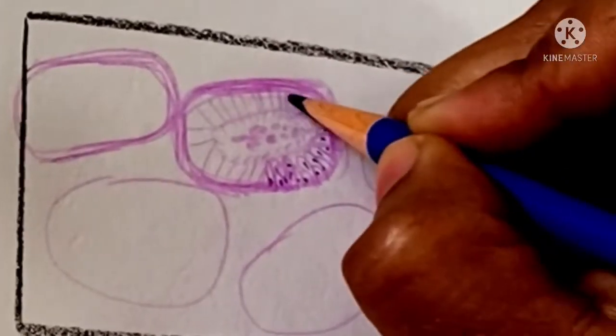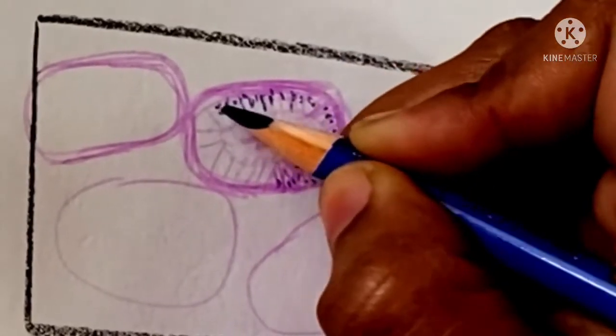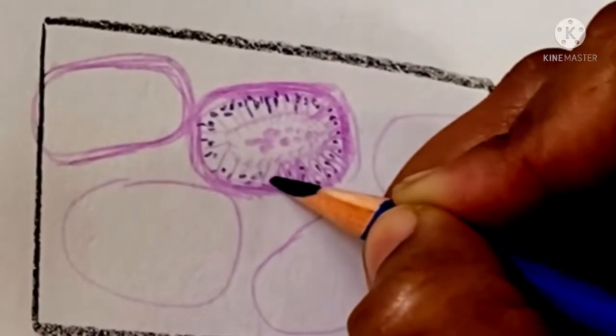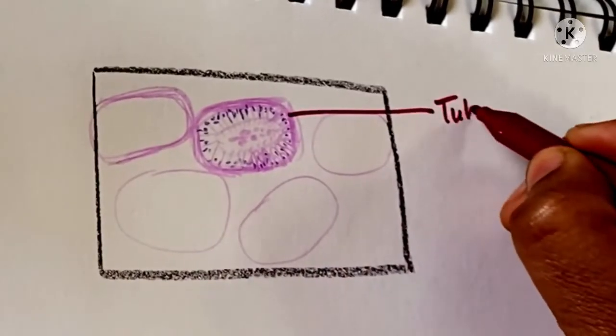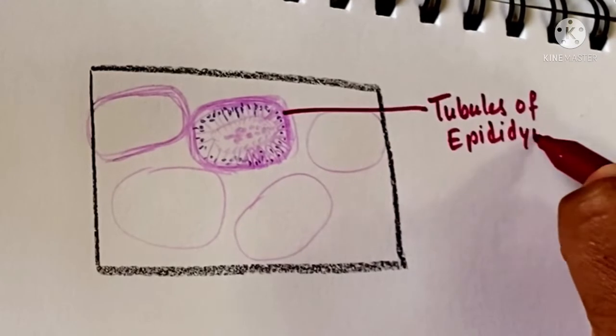Epithelium contains two types of cells: short basal cells and tall columnar cells with presence of stereocilia.